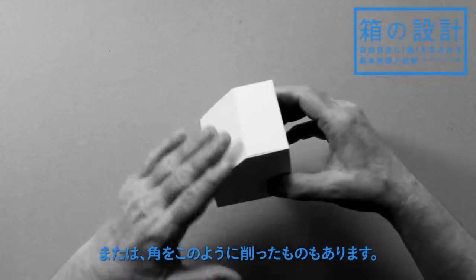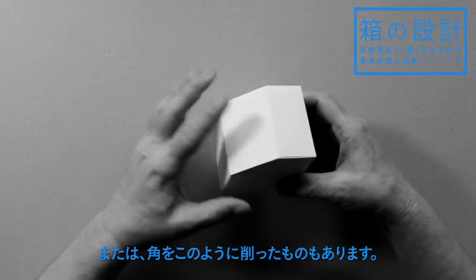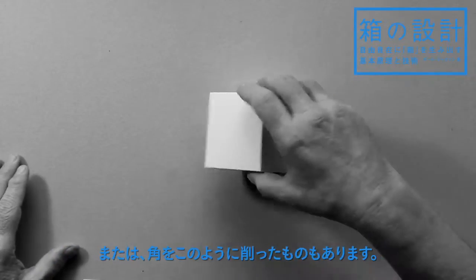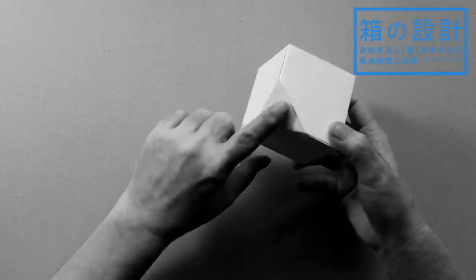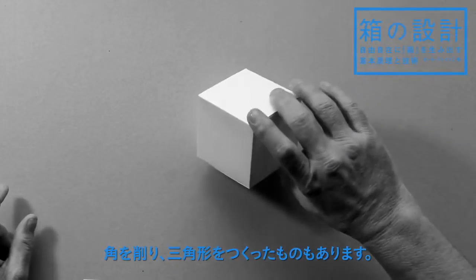Or perhaps take off an edge like this, where now there's an extra rectangle which it can stand on, or maybe take off a corner so we have a triangle here and again it can stand on that.